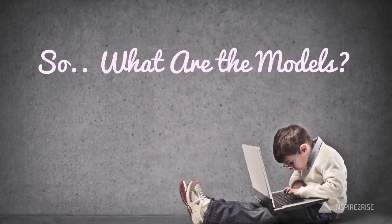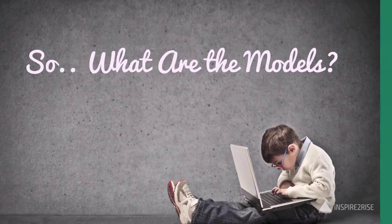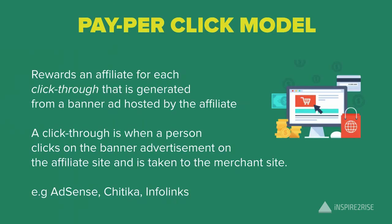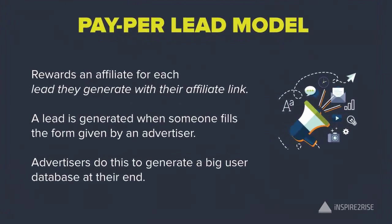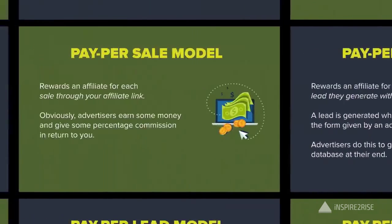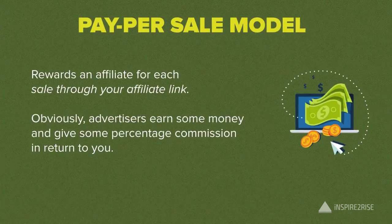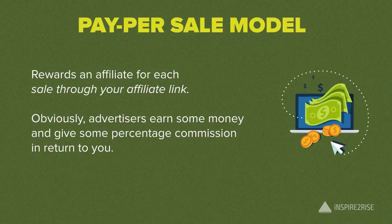What are the models for doing affiliate marketing? The first model is the pay-per-click model, where the user is rewarded for click-throughs generated by a banner or ad hosted by the affiliate. The pay-per-lead model is based on leads generated by the affiliate link — for example, survey forms generated by advertisers to build a large user database. The pay-per-sale model is where you get rewards for each sale through the affiliate link, and advertisers earn money while you get a small percentage commission.